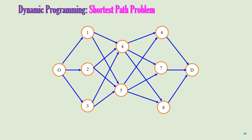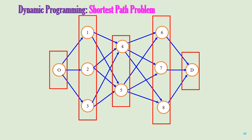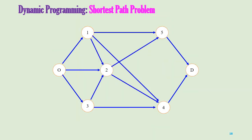Here are some examples. This graph represents another instance of the shortest path problem, and the objective is to find the shortest path from node O to node D. These are the stages for this shortest path problem. Let us look at another example where the objective is again to go from node O to node D. Notice that node O could be part of stage 1, and from node O you can make decisions to reach node 1, node 2, or node 3. However, you can also have decisions that take you from node 1 to 2 and from node 3 to 2. Therefore, nodes 1, 2, and 3 cannot be part of one stage.